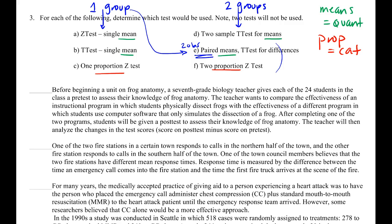The first question asks us to assess knowledge of frog anatomy. We want to compare the effectiveness of a program where students physically dissect frogs with one where they use computer software to simulate dissecting a frog. After completing one of the two programs, students are given a posttest. The teacher will analyze the change in test scores — posttest minus pretest. That change in test score is quantitative — we're going to have a number of points difference.